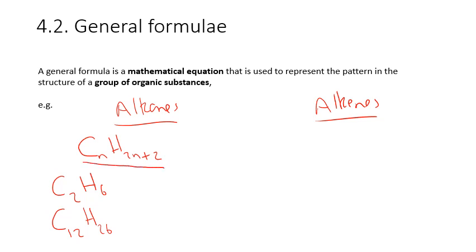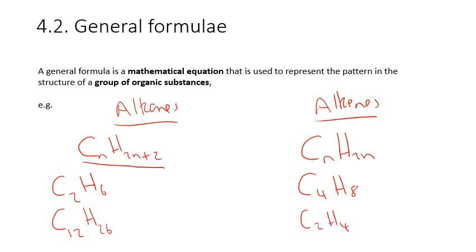For alkenes, it's slightly different but even simpler. In the case of alkenes, we've got CnH2n. So for any number of carbons in the chain, we have twice as many hydrogens: C4H8, C2H4, C100H200, and so on. Given these two general formulae, we can figure out the molecular formula of any alkane or alkene.